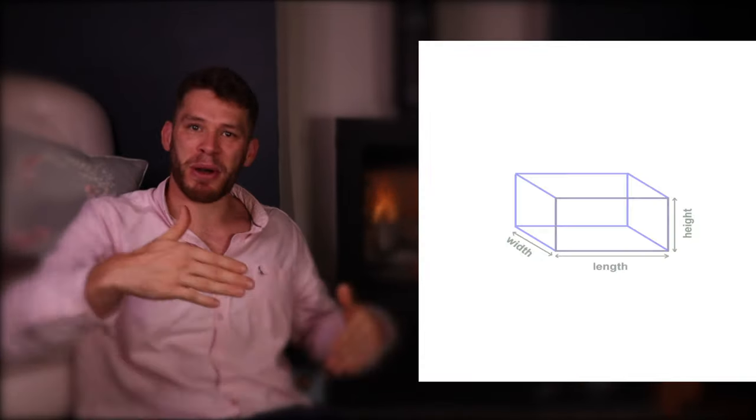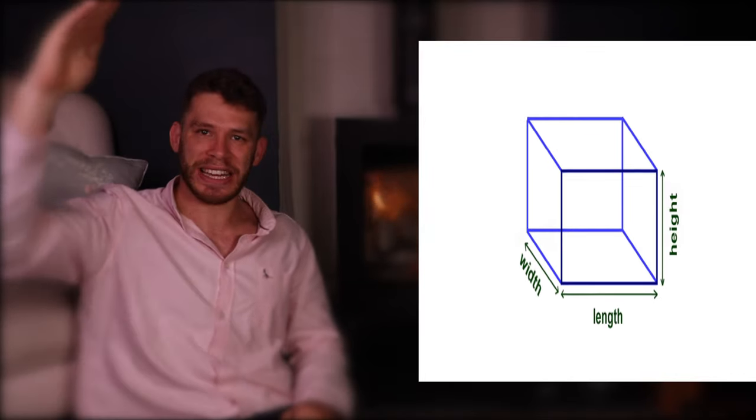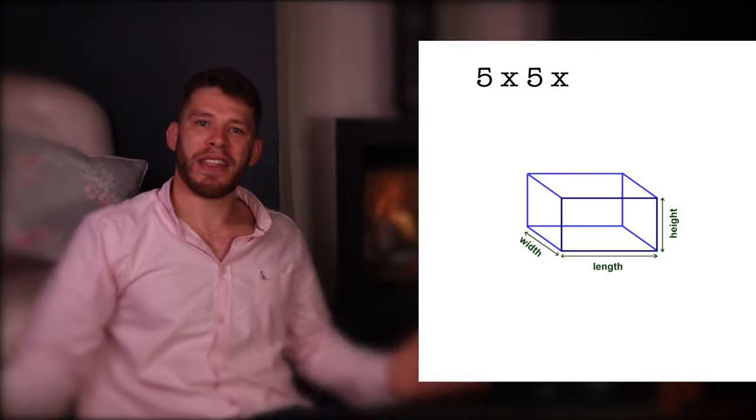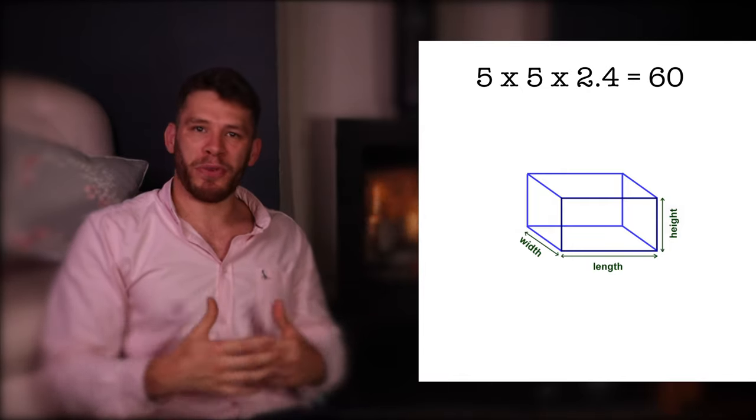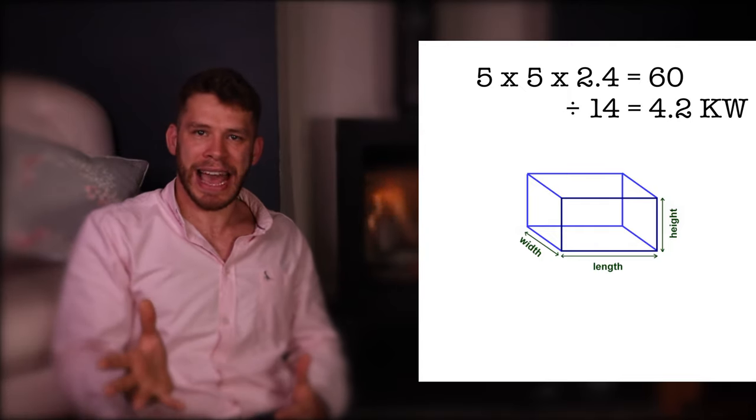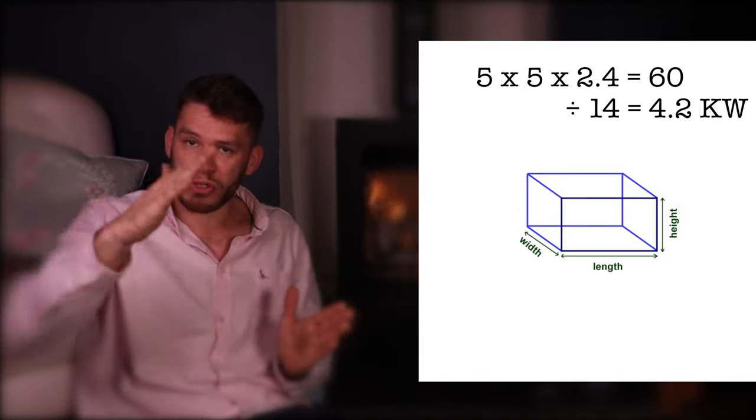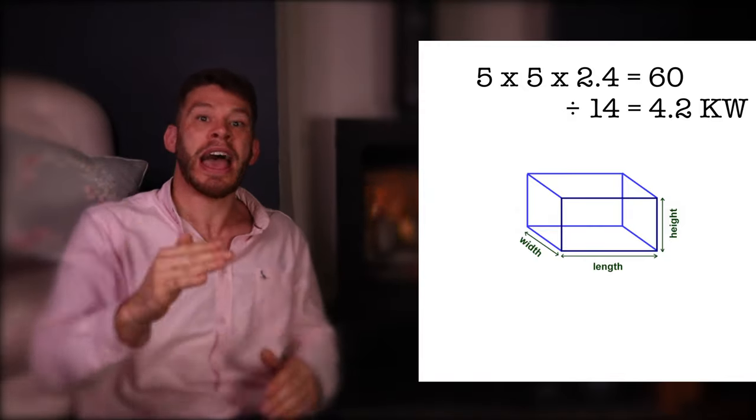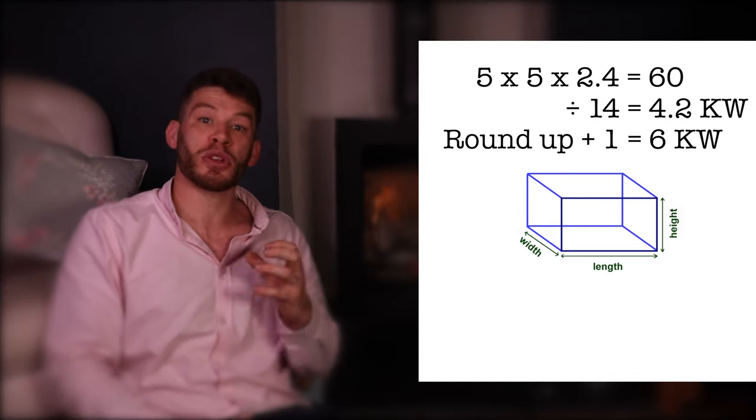And finally, we've got serious user in an old place. So in our example, five meters by five meters is your room size and a normal ceiling height of 2.4. That added together is 60. And we divide it by 14, which gives us 4.2 kilowatts. We'd immediately add or round that up to a round figure, never down. We always round it straight up to five. And then we add another kilowatt. So we've got some flexibility. So we're at six.